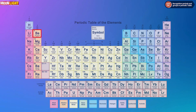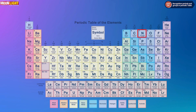After lithium comes beryllium, with 4 electrons. Then boron has 5 electrons. Then carbon has 6 electrons. Then nitrogen has 7 electrons.